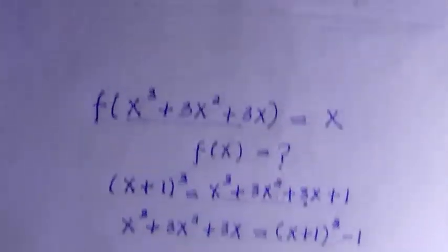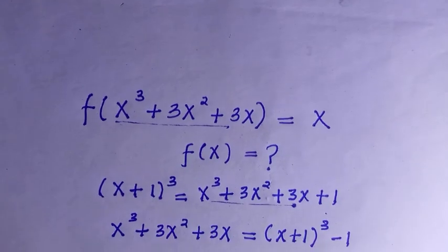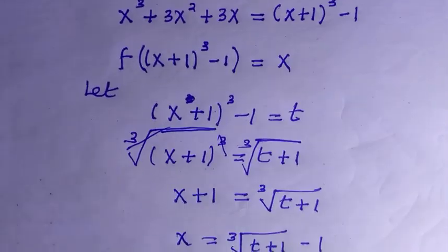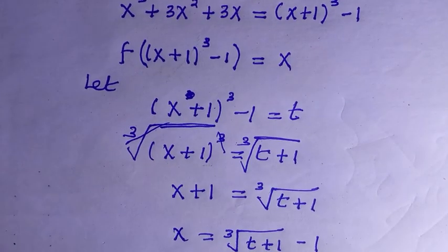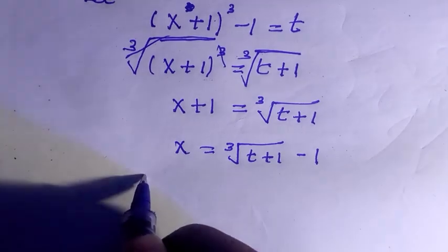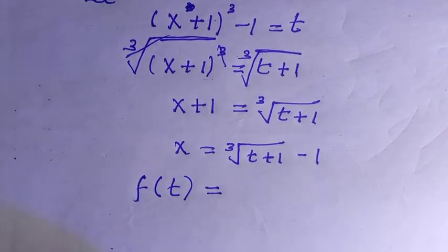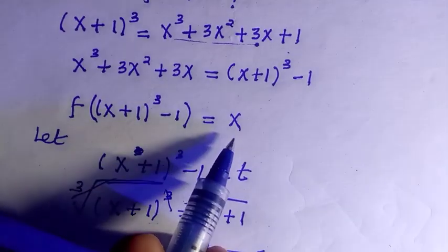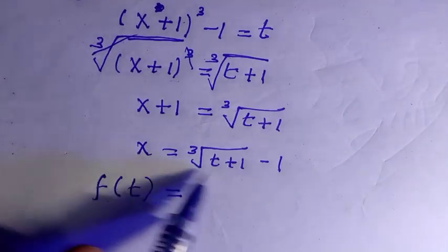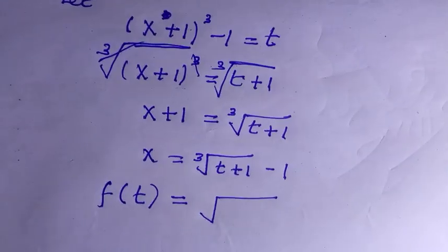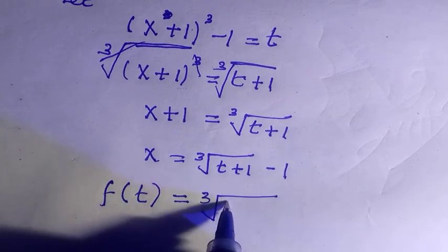Now we go back to the function we formed, f(t) = x. We replace x with what we found in the last step. So we have f(t) = ³√(t+1) - 1, and the minus 1 is outside, not inside.